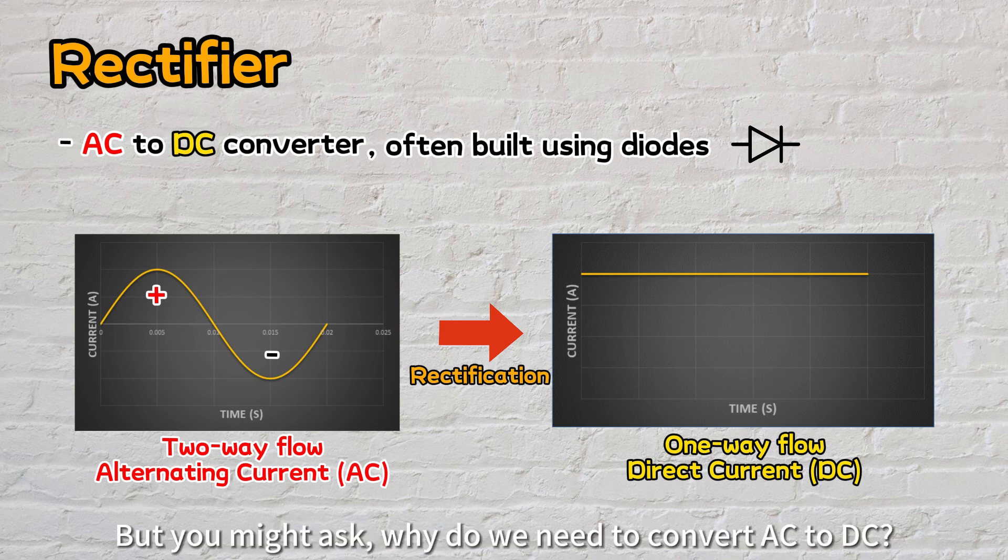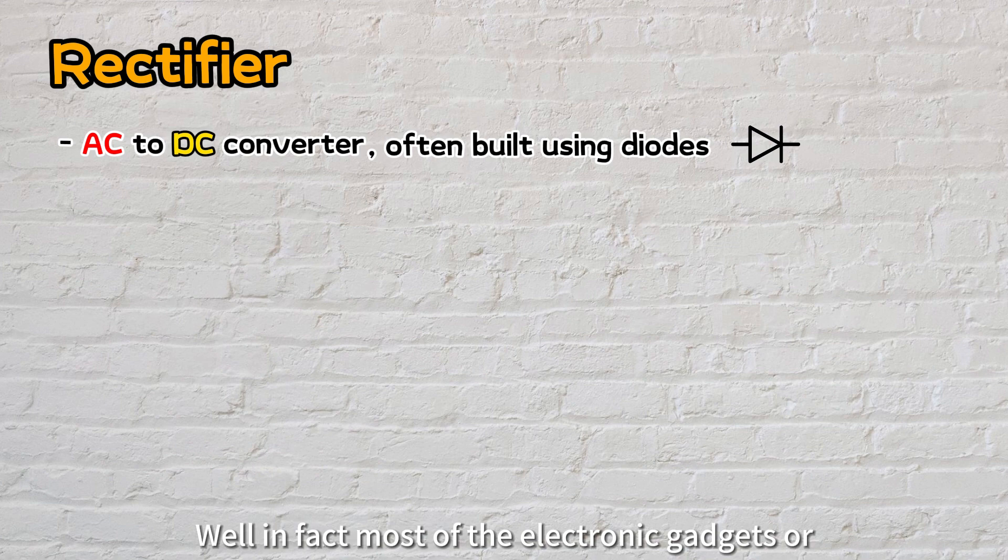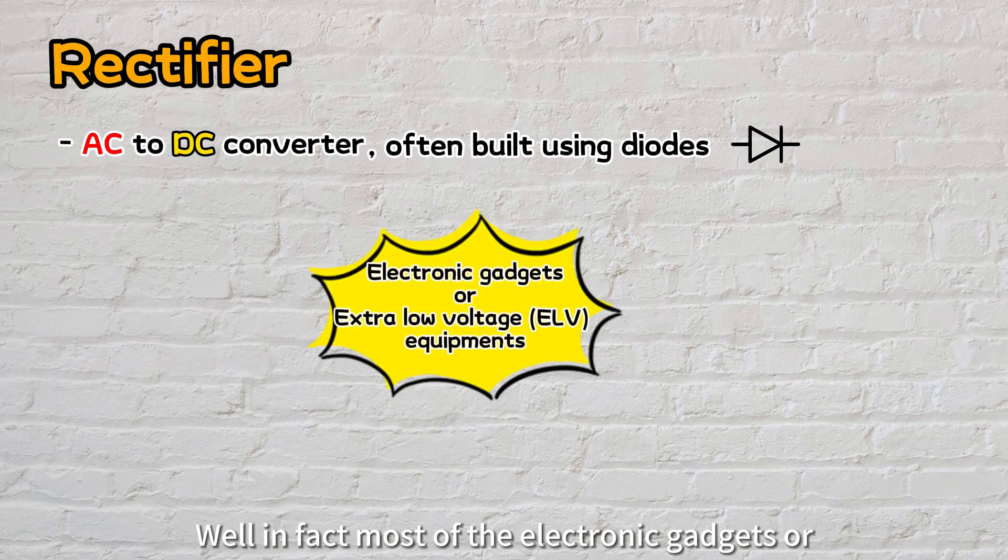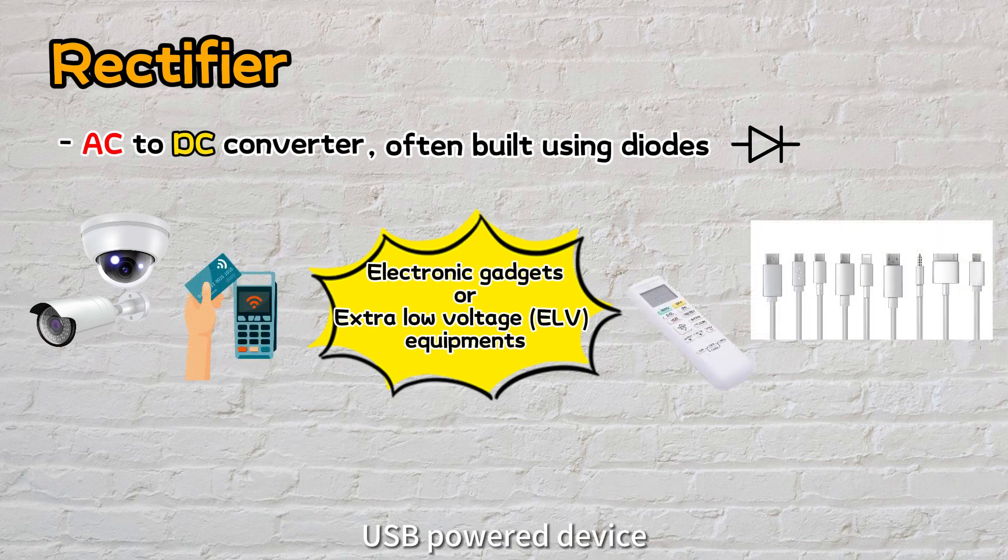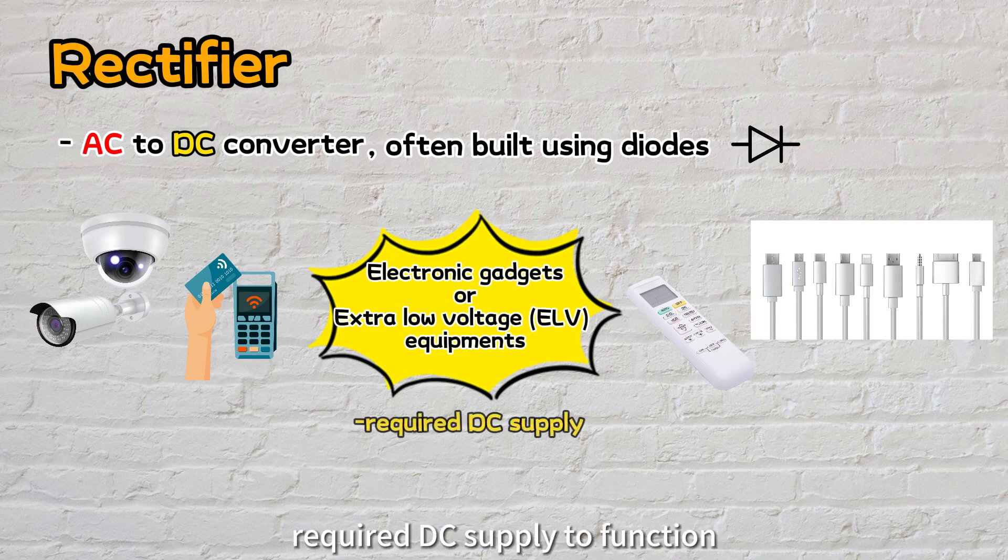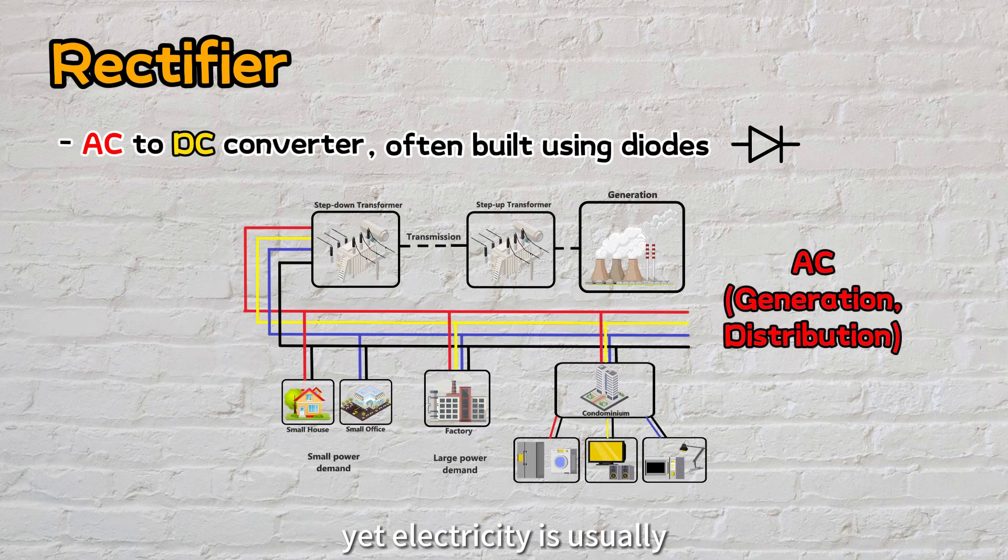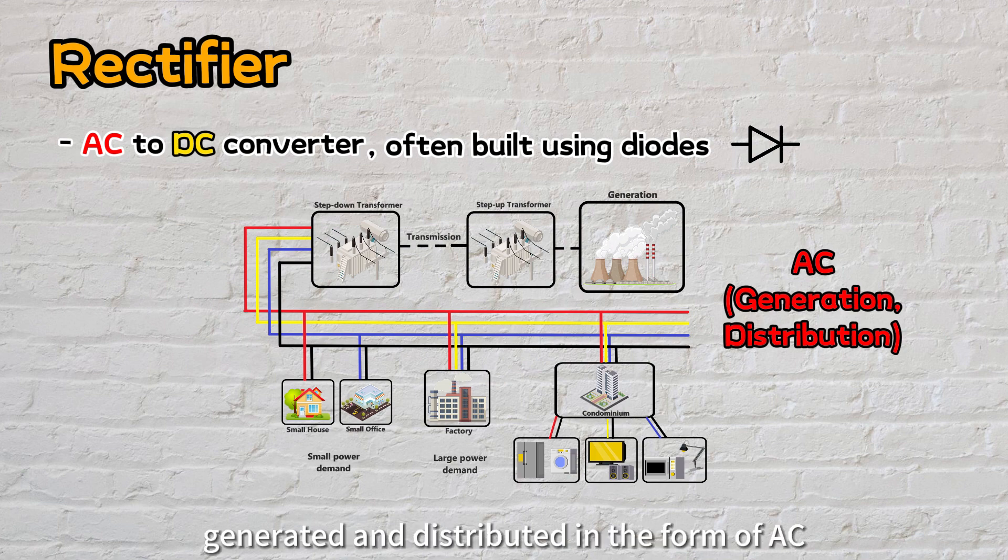But you might ask, why do we need to convert AC to DC? Well, in fact, most electronic gadgets or extra low-voltage equipment such as CCTV cameras, card access systems, remote controls, USB-powered devices, and various other equipment require DC supply to function. Yet, electricity is usually generated and distributed in the form of AC.